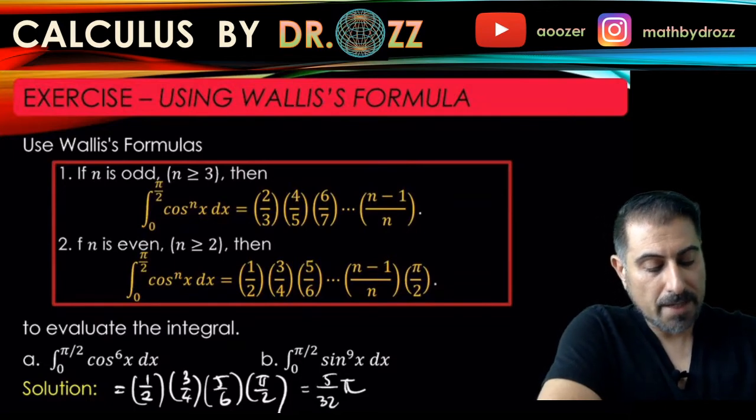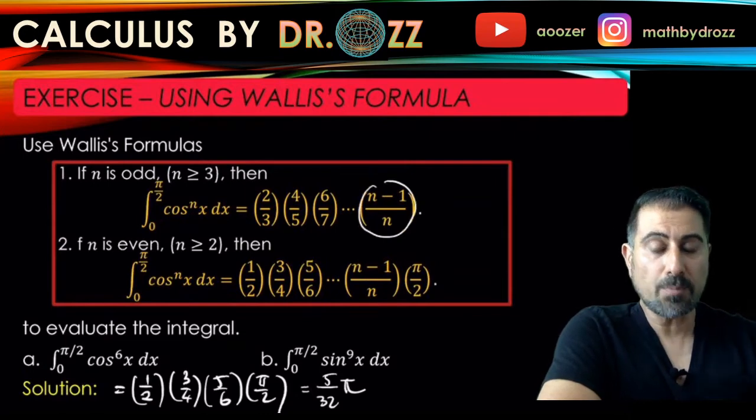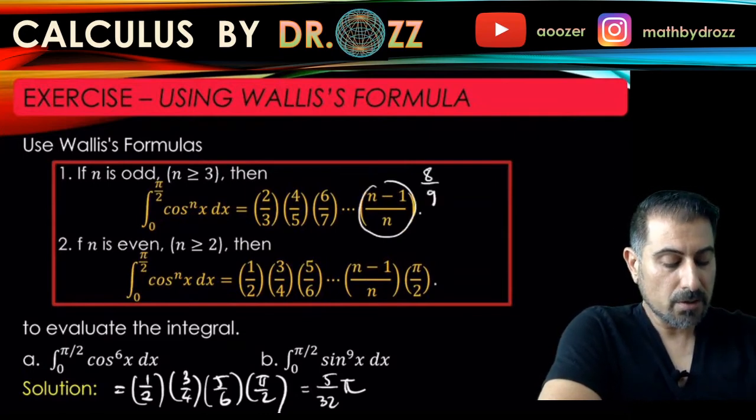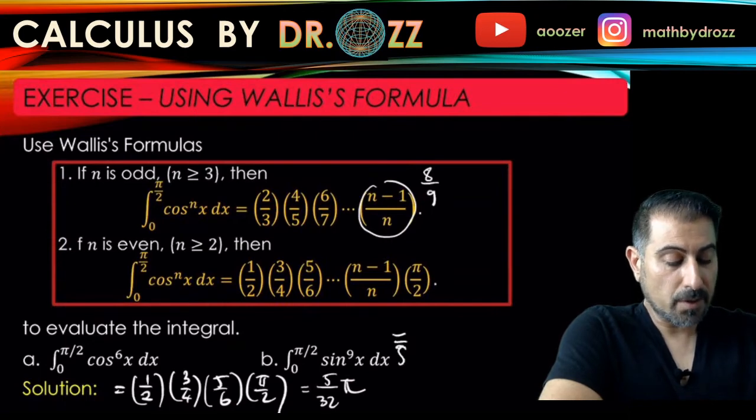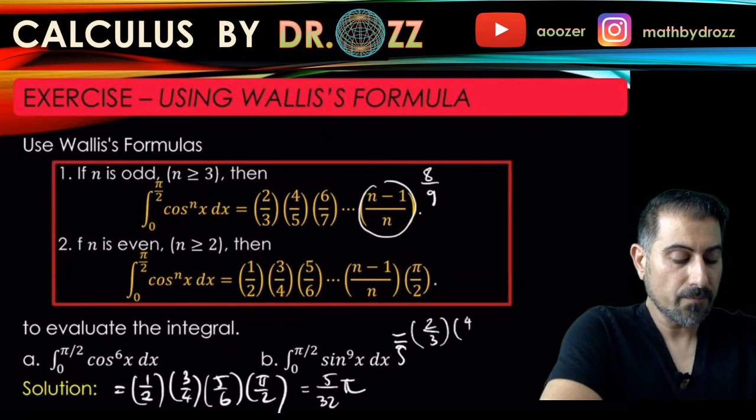So the last term looks like 9 minus 1, 8 over 9. So I'm going to keep all the ratios here, so I'm just continuing from here. I'm going to keep all the ratios, and then the products here, till I hit 8 over 9. Yep, that's where I stop.